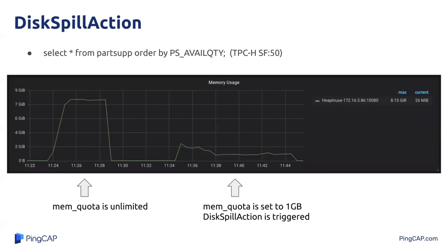First, let's take a closer look at the effectiveness of the disk-spill action and the rate-limit action in TIDB. This graph shows the effectiveness of the disk-spill action. The dataset we use is a TPC-H with scale factor 50. We query all the data in a table and sort the result by a column without an index. We can see from the left part of the graph that almost 8GB is used before we set the memory quota. After the memory quota of a SQL is set to 1GB, the disk-spill action is triggered, and the memory usage of this SQL converges to almost 1GB.